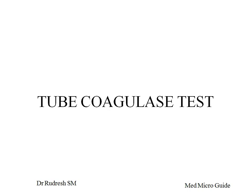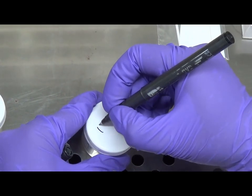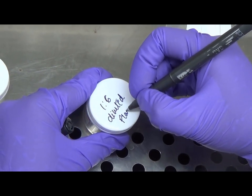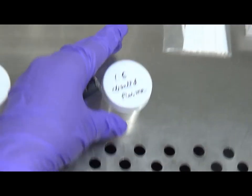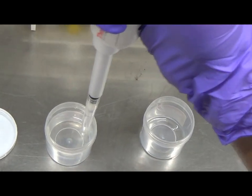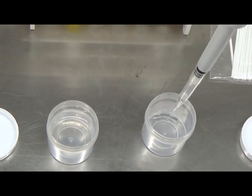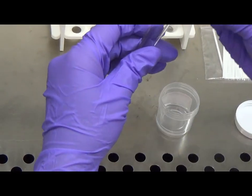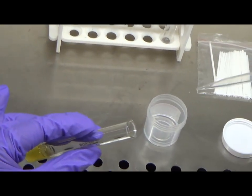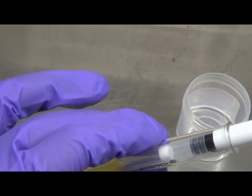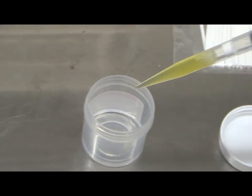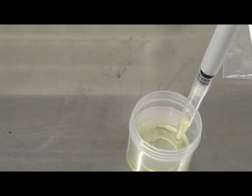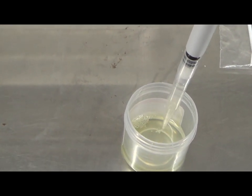Now we will see how to do the tube coagulase test. First, we will prepare the diluted plasma. Take a sterile universal container and label it as 1 in 6 diluted plasma. Add 5 ml of sterile normal saline to the container. To this 5 ml of saline, add 1 ml of pooled human plasma. Adding 1 ml of pooled plasma to 5 ml of saline gives a final dilution of 1 in 6. This freshly prepared plasma can be kept in the refrigerator for 2 to 3 days.